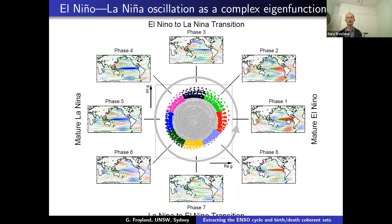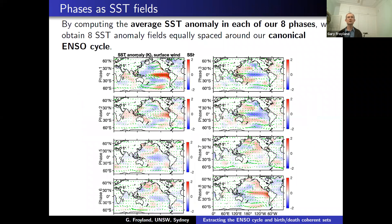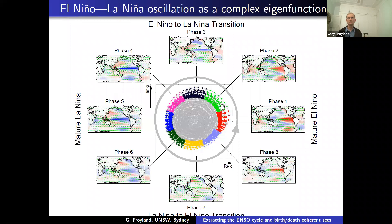Here are some slightly larger pictures. The green arrows indicate the wind field: while we used sea surface temperature data to build our transfer operator, we also have measurements for things like surface wind, rainfall, and other meteorological measurements. In the same way — by averaging across wedges — you can see the evolution of, say, rainfall around the ENSO cycle.